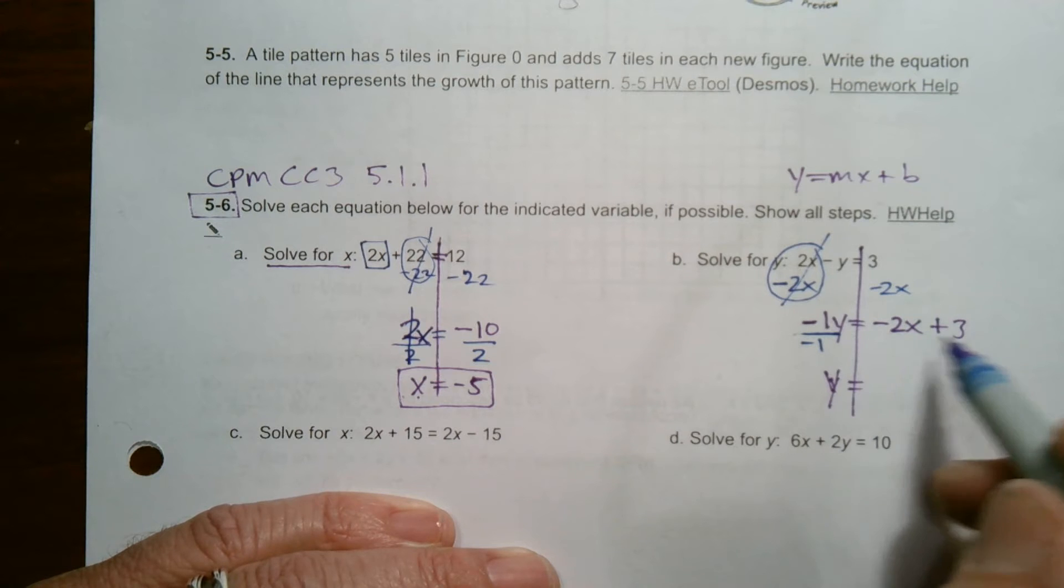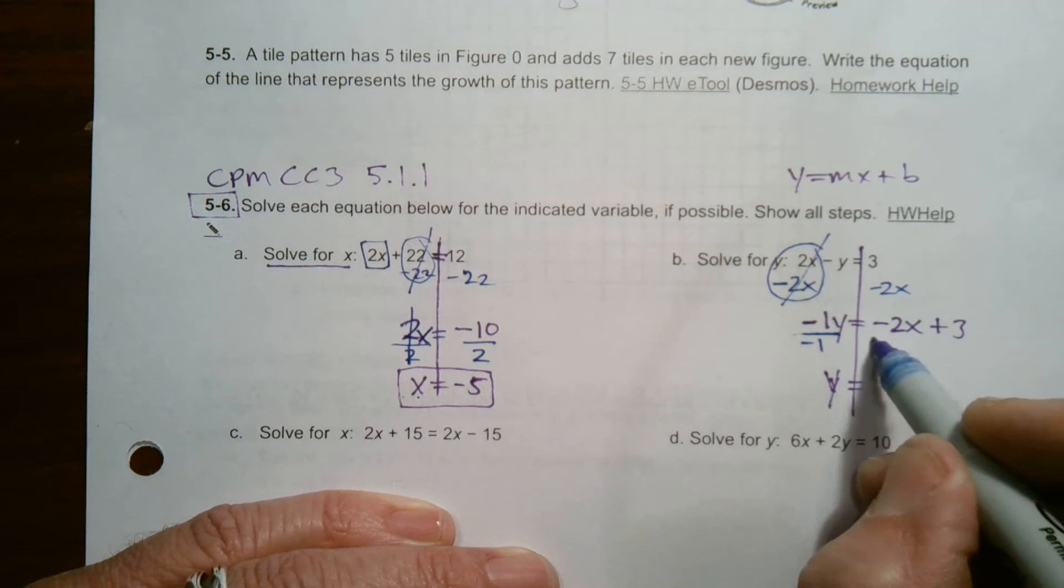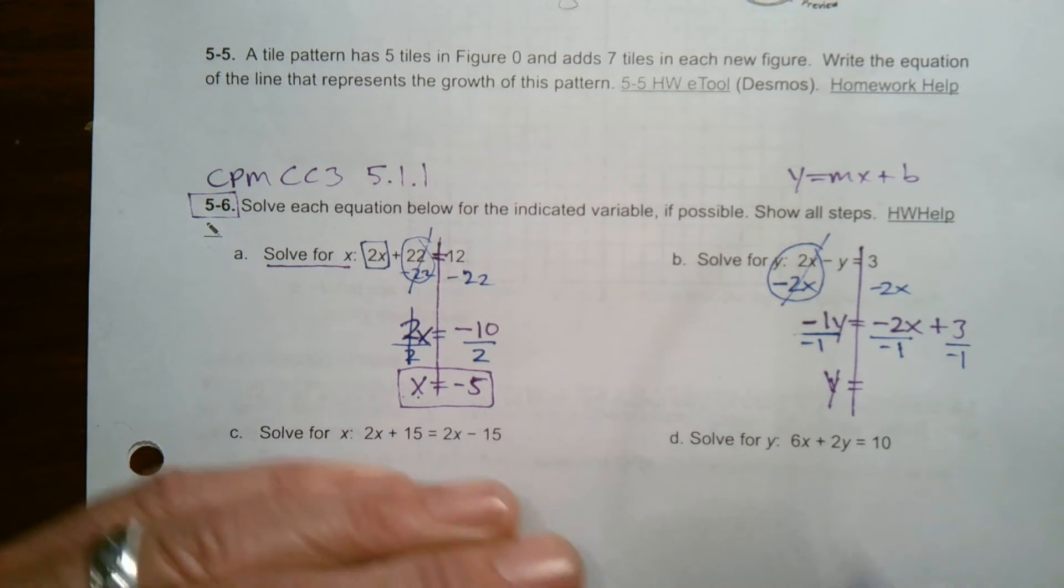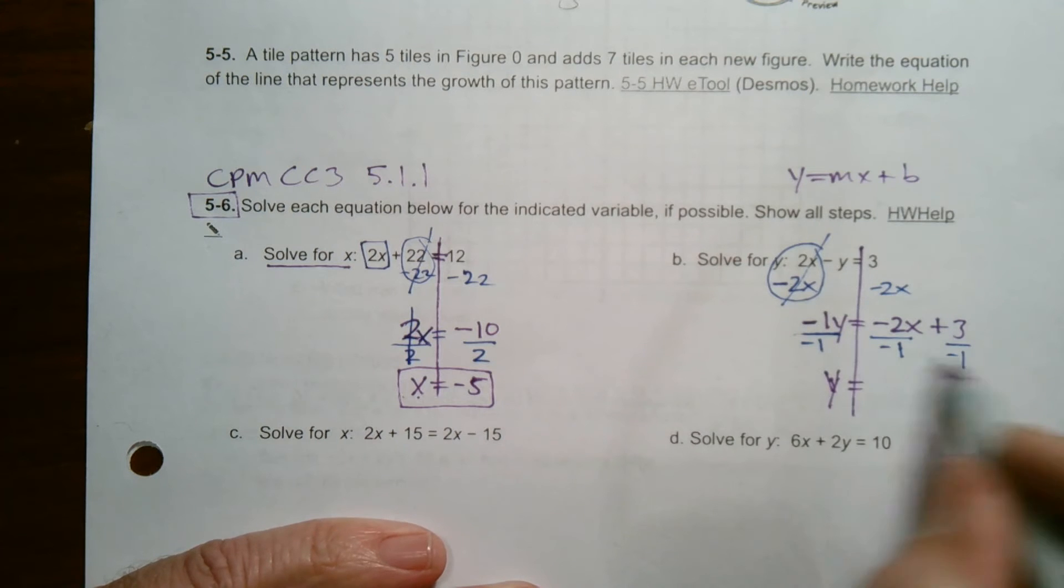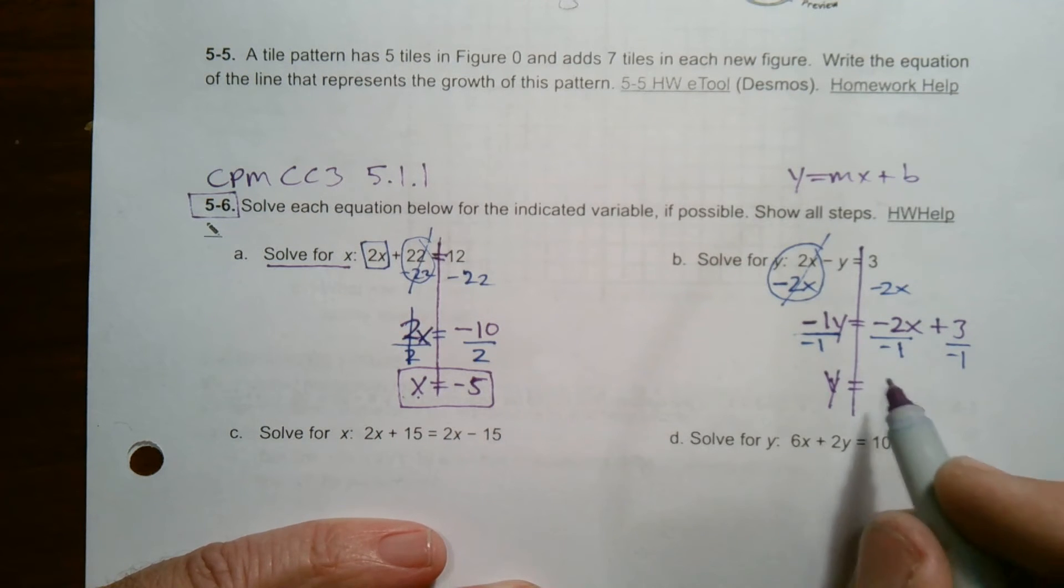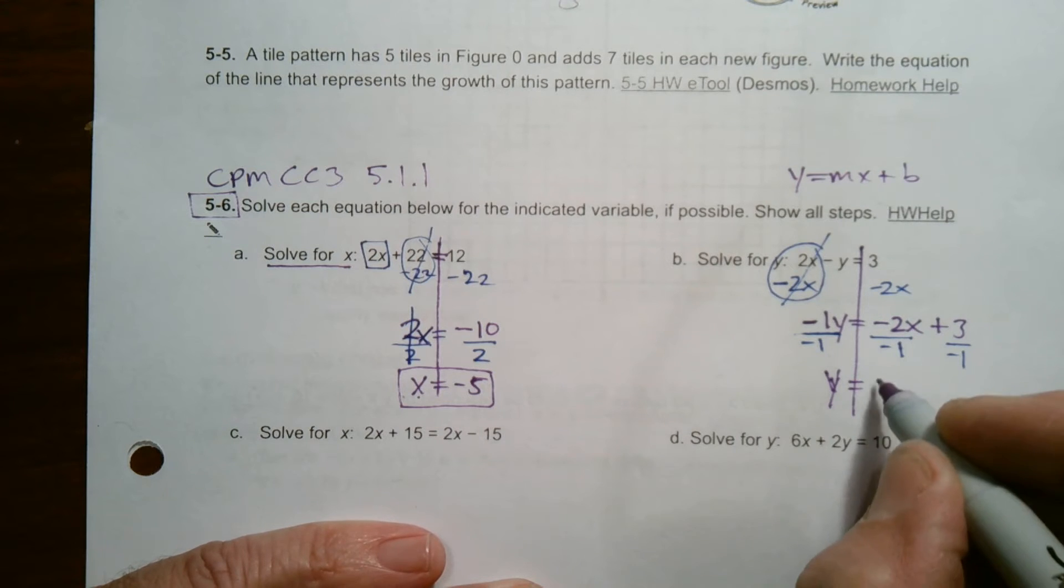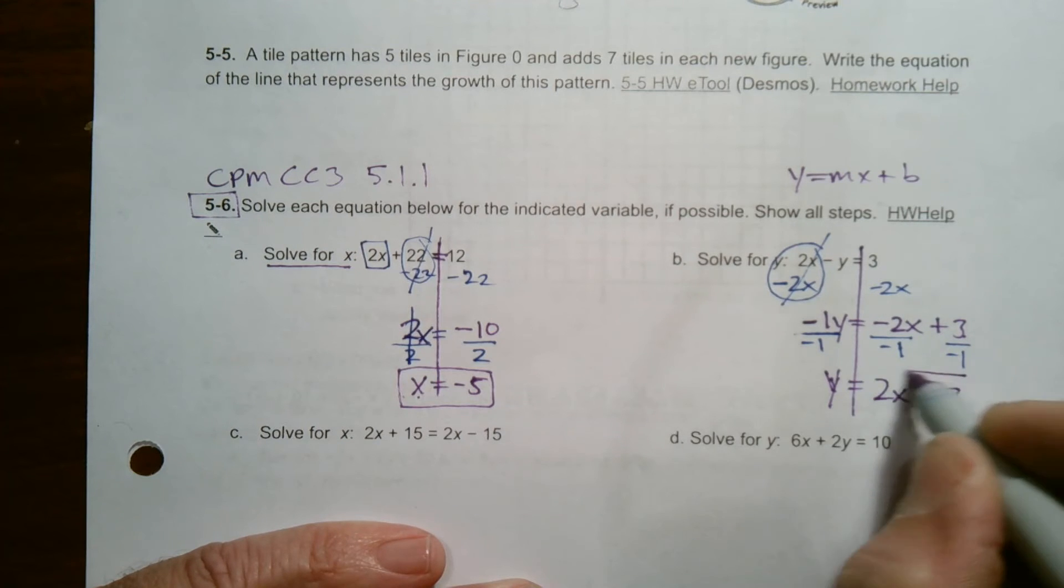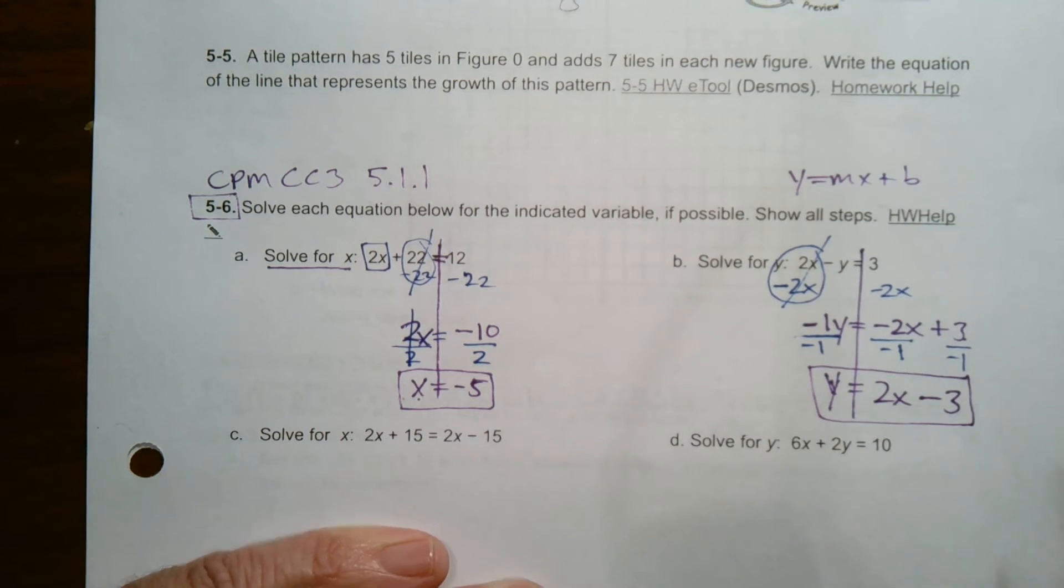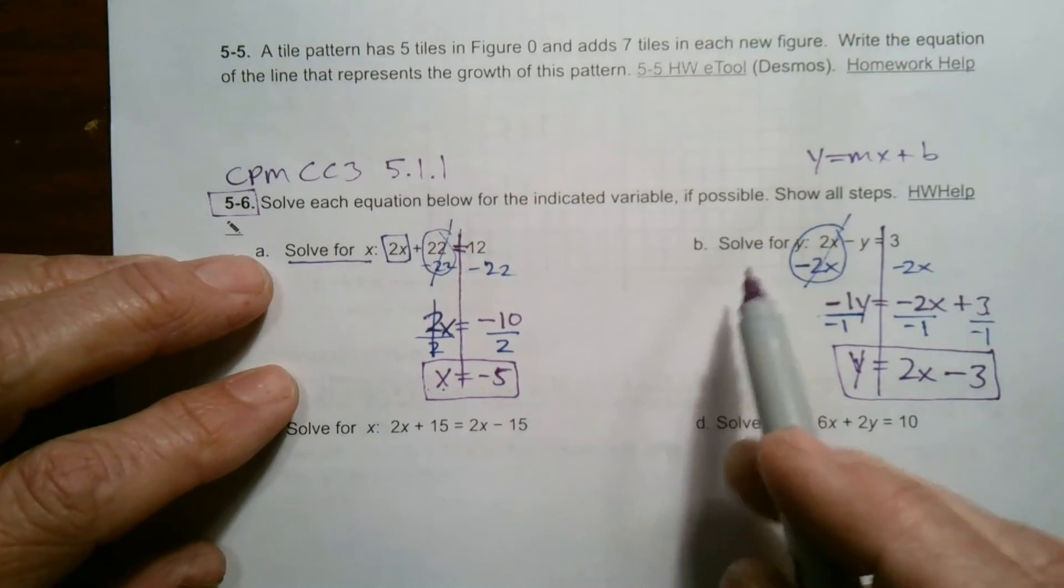But what you do to one side, you do to the other. But keep in mind, you don't just divide it all by negative 1. You divide each individual by negative 1. Each term has to be affected because you're doing division. You're distributing the division across all terms. So negative 2 divided by negative 1 is positive 2x. And then a positive 3 divided by negative 1 is a negative 3. So we can change that to be minus 3. So this is the answer for B. Y equals 2x minus 3. That's solving for y.